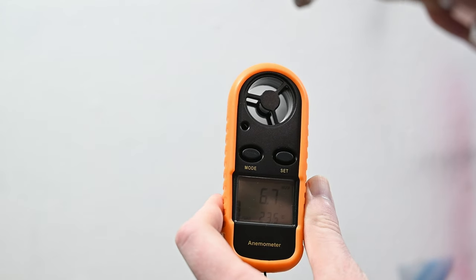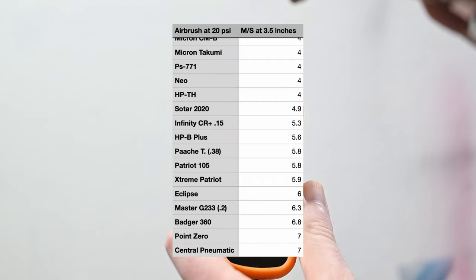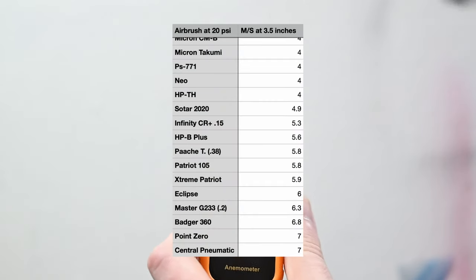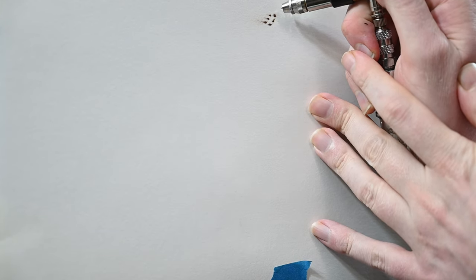So let's move along to the spray test. The first thing I want to check is the airspeed. So at three and a half inches away, spraying at 20 psi, I get an airspeed of around 6.8 meters per second. And since this airbrush is designed to spray thicker paint and it has that larger nozzle size, an airspeed like this is perfect.